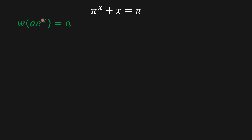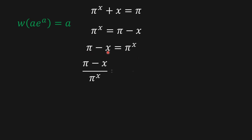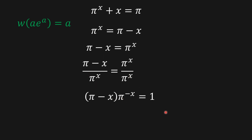In order to isolate x, I'm going to rewrite the equation, then flip it, and divide both sides by π to the x. From here we get a term with a negative power, and one side becomes 1.